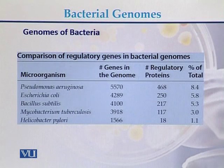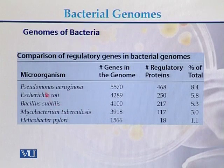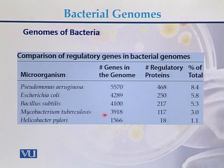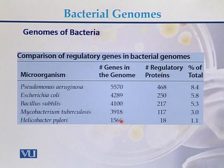Here we can see a comparison of the number of genes on different bacterial genomes. In the case of Pseudomonas, we can see the number of genes; in E. coli the number of genes is approximately 4,289; Bacillus subtilis has 4,100; Mycobacterium tuberculosis has 3,918; and Helicobacter has 1,566 genes present on its genome.